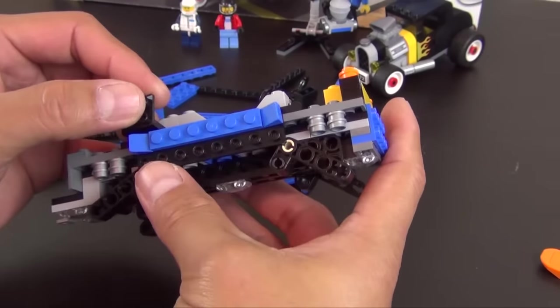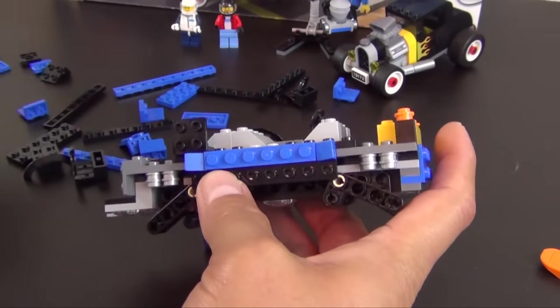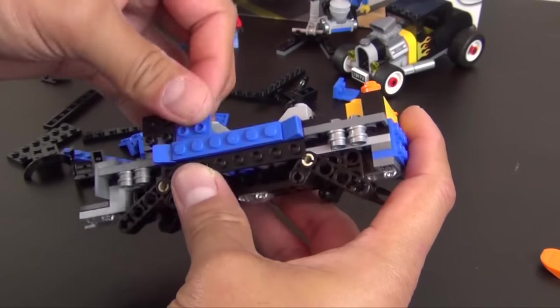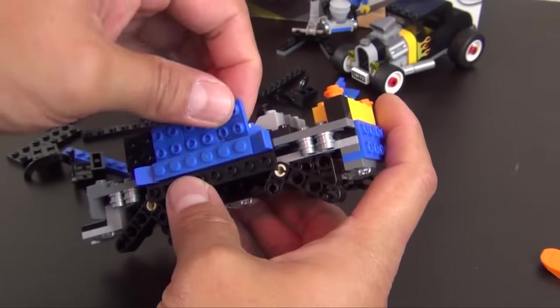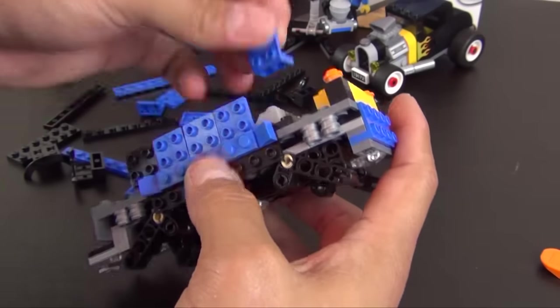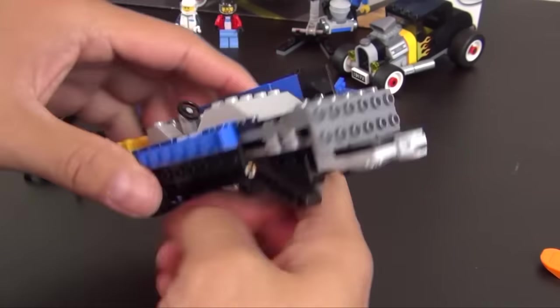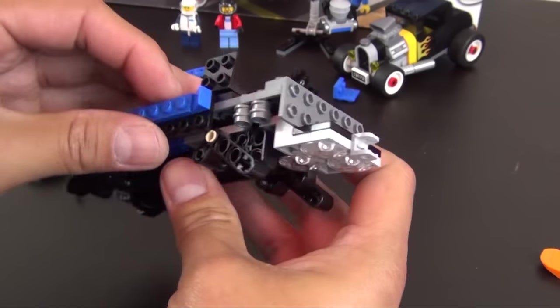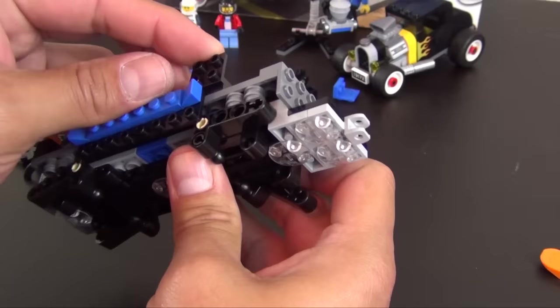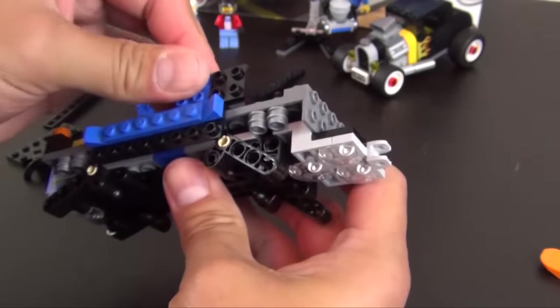All right, now we've kind of hit the bracket jackpot here. We're going to line the sides all the way down, both sides with all of these brackets. Start with a black one and we'll go blue.